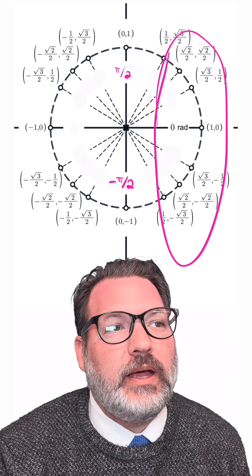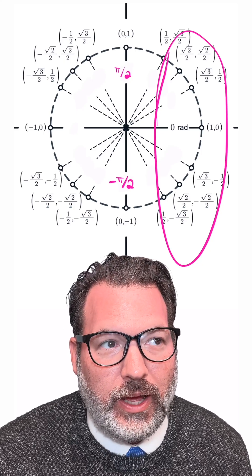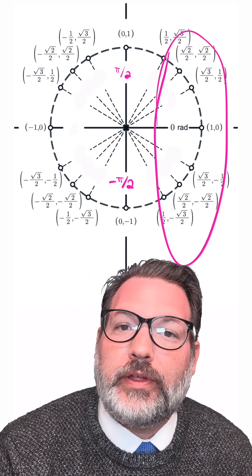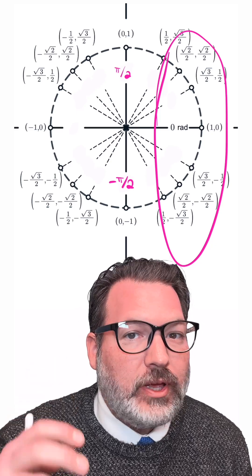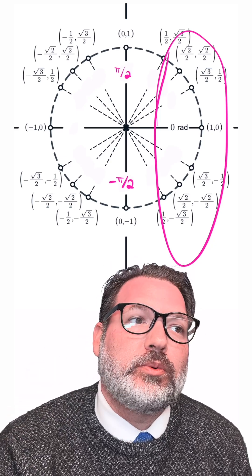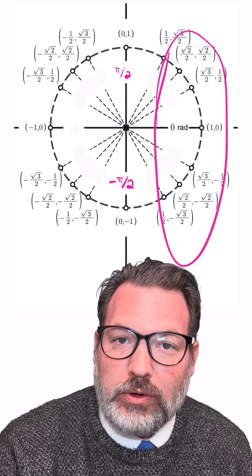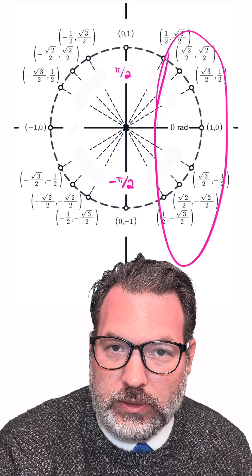Similarly, if we wanted a function that took a given x-coordinate and returned the angle on the unit circle that corresponded to that x-coordinate, that is, if we wanted an inverse cosine, or arc cosine, we would need to restrict ourselves to an area of the unit circle where our x-coordinates don't get used more than once.